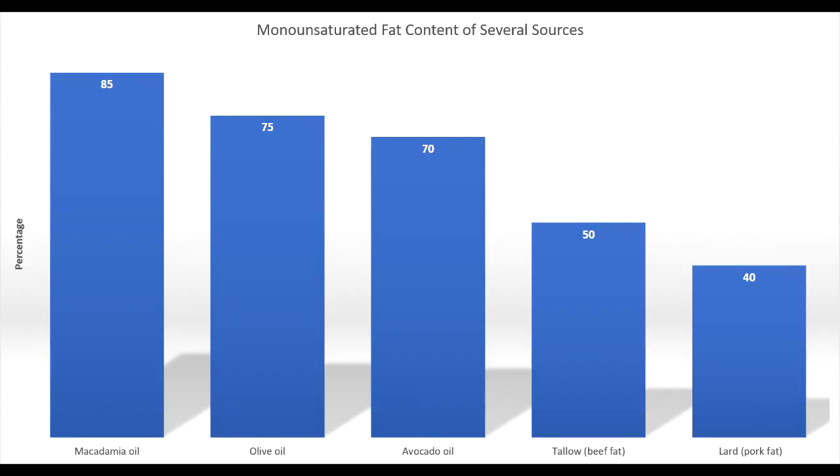As a bonus, monounsaturated fats are generally anti-inflammatory and are promoted by most health sources. Macadamia oil has quite a high amount at 85%, olive oil at 75%, avocado oil at 70%, tallow at about 50%, and beef and pork fat at about 40%. So the oils I cook with are coconut, macadamia nut, avocado, olive oil at low heat, ghee, tallow, lard, and pork fat — these mostly stable fats. I never cook at high heat.